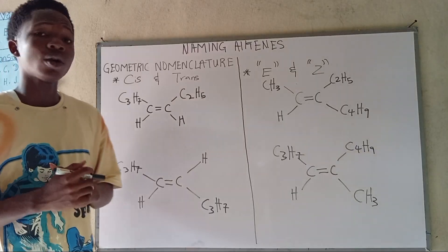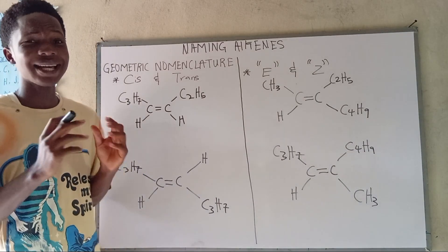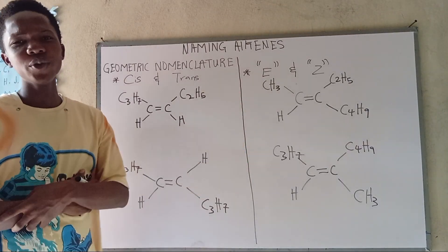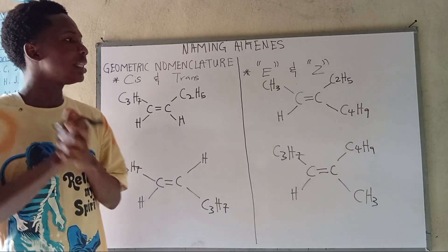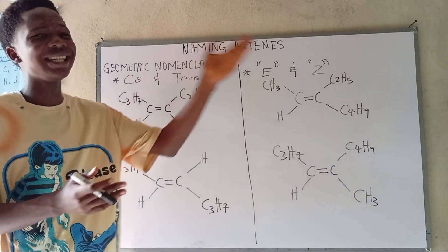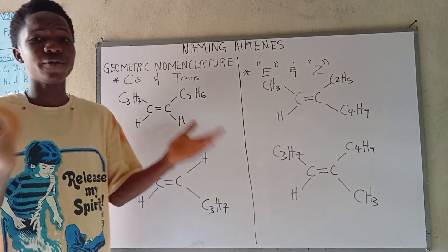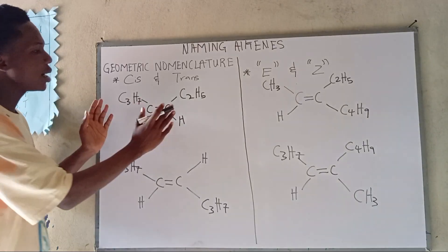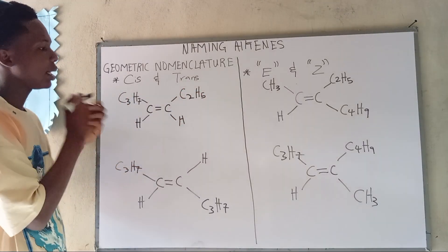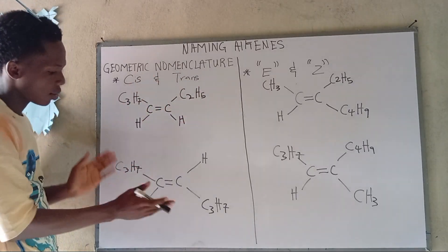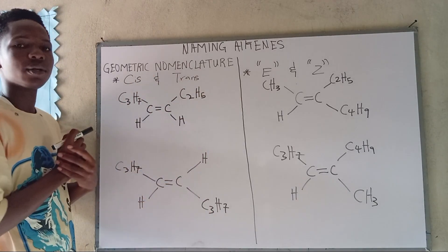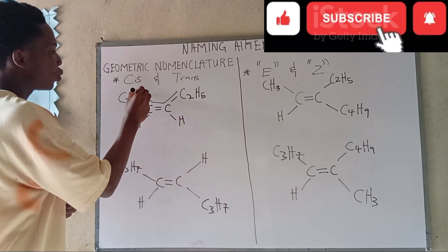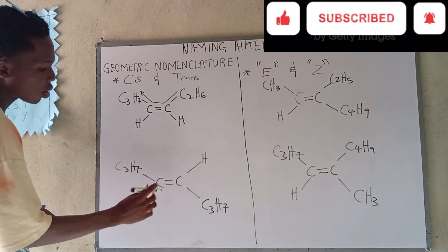Now this is where things get interesting. We know cis and trans but we need to understand E/Z nomenclature. By the end of this section we'll understand how these two relate to each other. Looking at cis and trans: where both carbons on the double bond have identical groups — these two are identical, these two are identical — that is why we call one cis and the other trans.